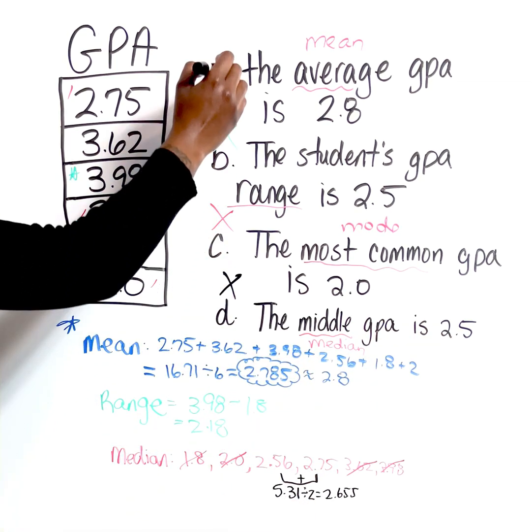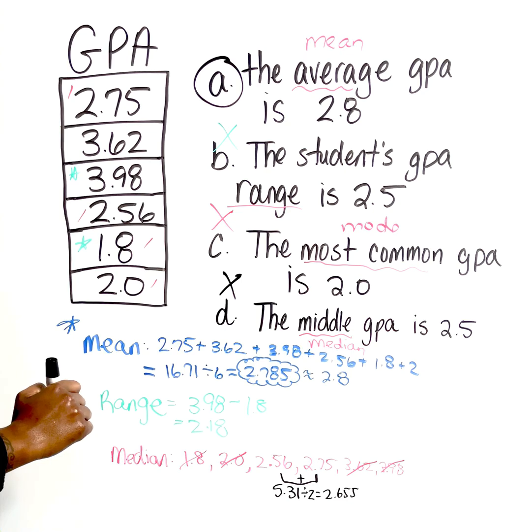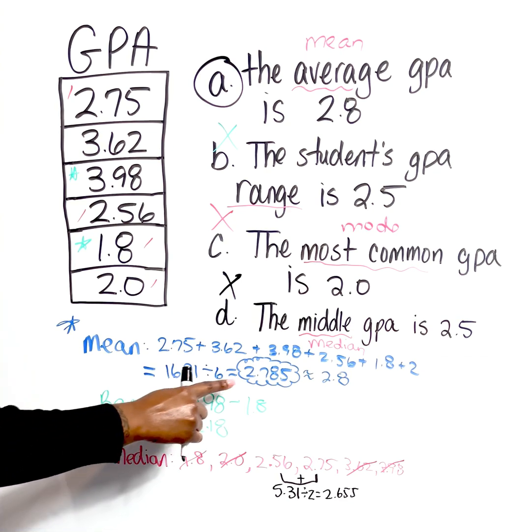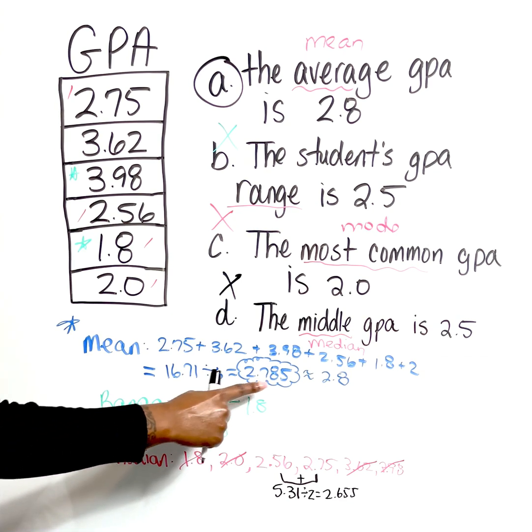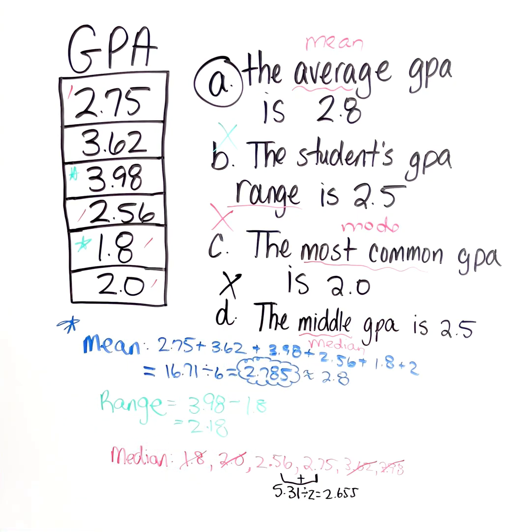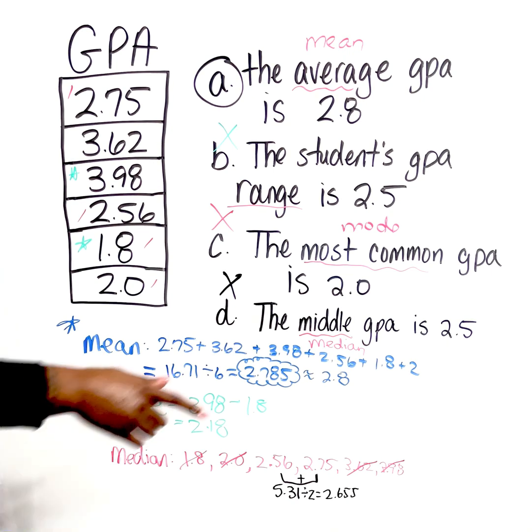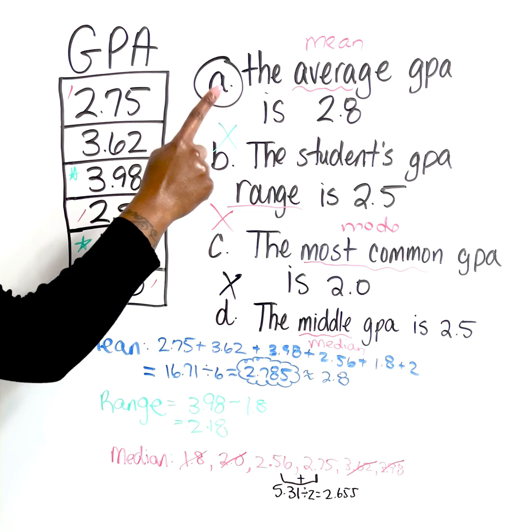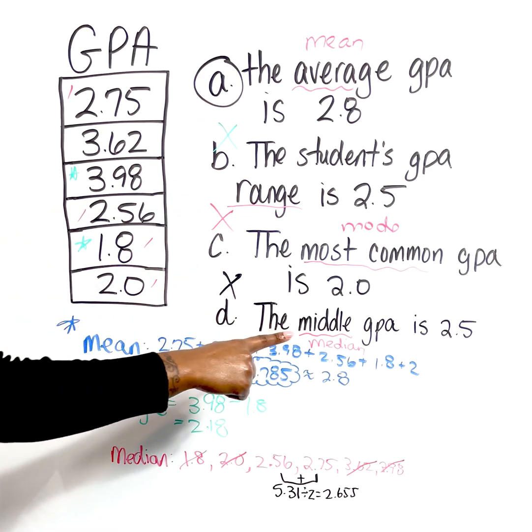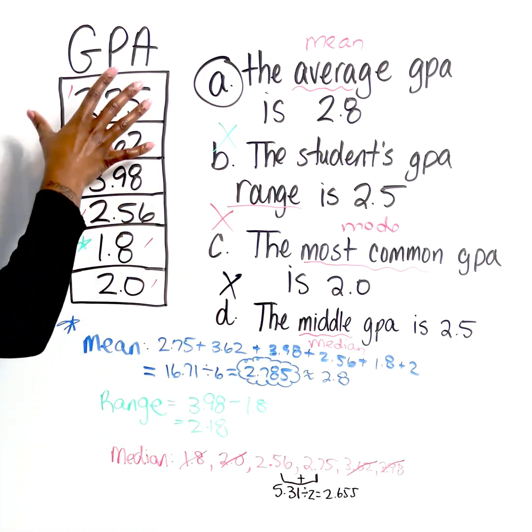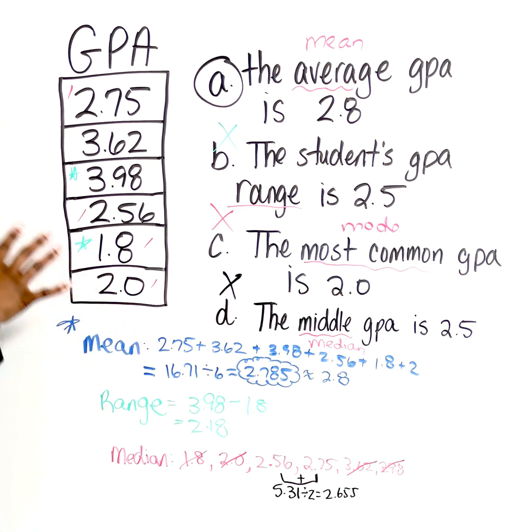So that means our answer is A. The mean, the average GPA is 2.8. Remember, we ended up with 2.785, which rounds to 2.8 if we round to the nearest tenth. So again, this is a scenario where you guys have to be able to interpret the data. You have to understand what the mean represents, what the range represents, what the mode represents, what the median represents, so that you can take data and you can draw conclusions based on what they give you.